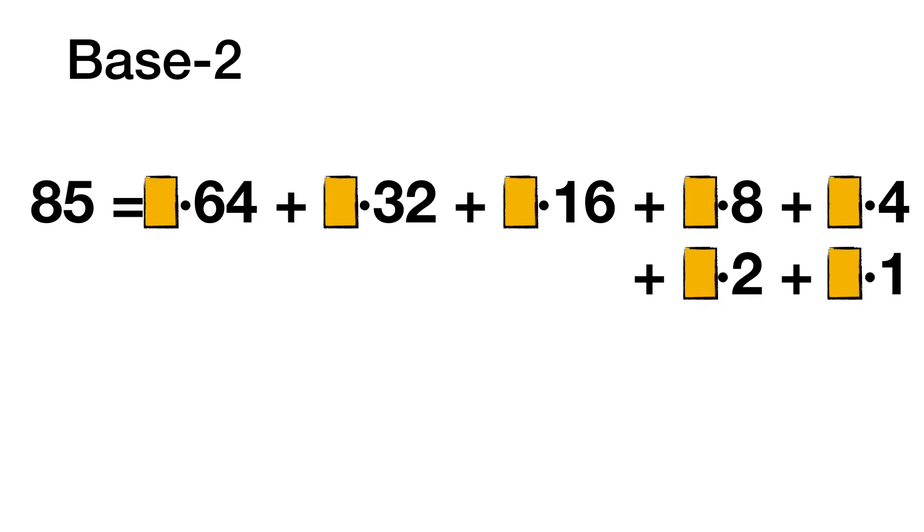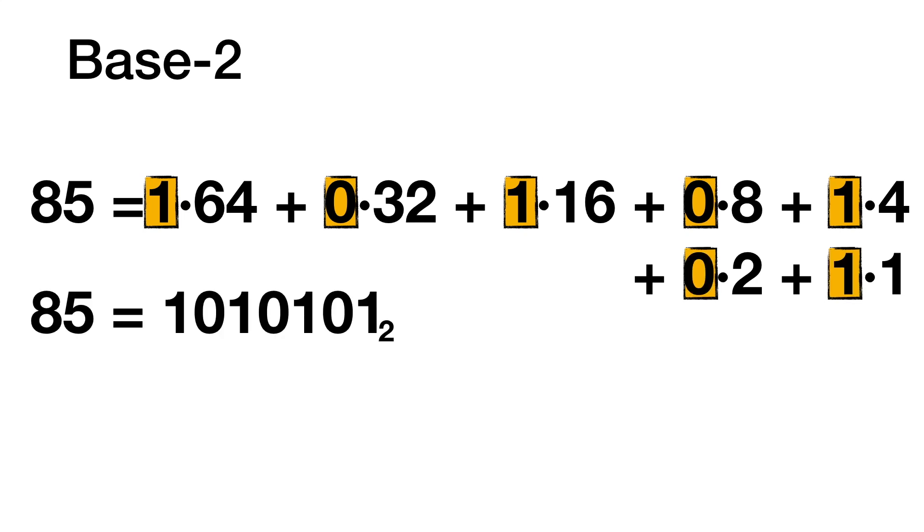Let's try a bigger number, 85. In this case, we need powers of 2 to go all the way up to 64. 1 sixty-four plus no 32s, 1 sixteen, 0 eights, 1 four, 0 twos, and 1 one. 85 is written as 1010101 in base 2.